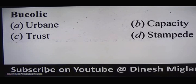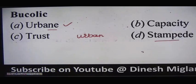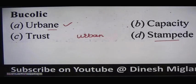Next word: 'bucolic.' Bucolic means rural or countryside — anything which belongs to rural or countryside is bucolic. Option A is 'urbane' — be very careful with the pronunciation, it is urbane not urban. Urban means anything belonging to the city, while urbane means sophisticated, elegant, or modern. So the antonym of bucolic should be urbane. Option B is 'capacity.' Option C is 'trust.' Option D is 'stampede,' meaning a panic or rush — generally used for incidents and accidents, such as the tragic stampedes in holy or religious places.